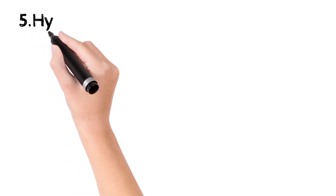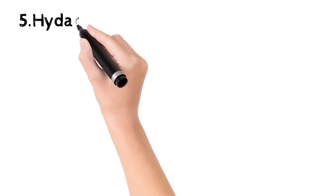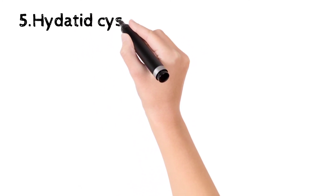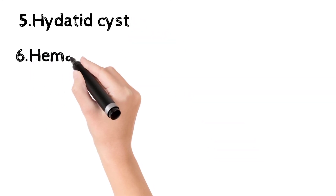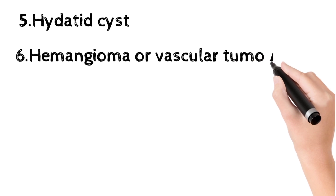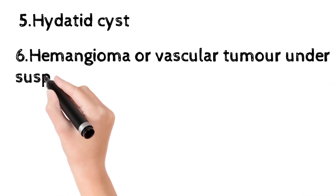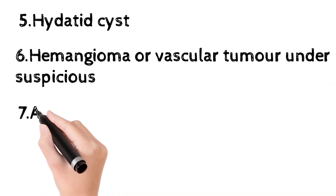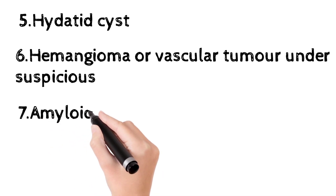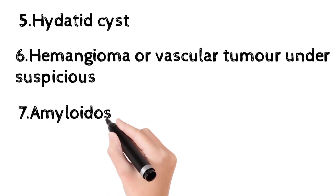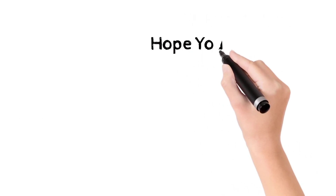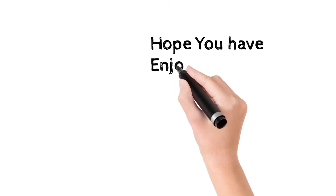The fifth contraindication is hydatid cyst of the liver, because puncture can lead to spread of cyst contents throughout the abdomen and can cause anaphylactic reaction. The sixth is hemangioma or suspected vascular tumor, due to increased risk of bleeding. The seventh is amyloidosis, which also carries an increased risk of bleeding. These are all the contraindications for performing liver biopsy.